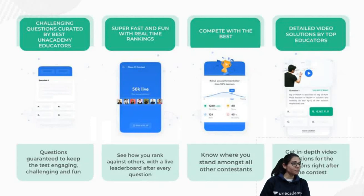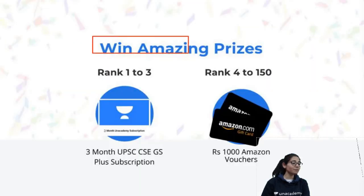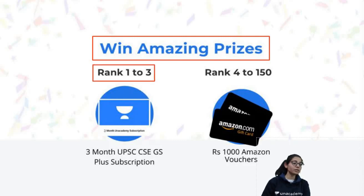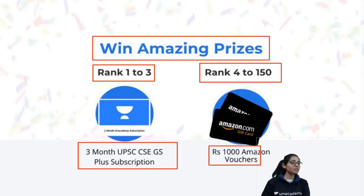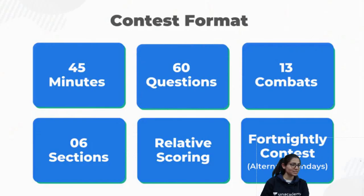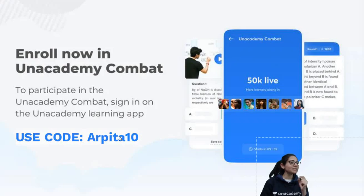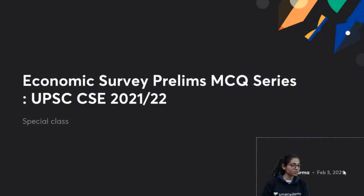After every question, you'll get detailed video solutions by top educators on Unacademy. You'll see your scoreboard, leaderboard, and rating, and you'll have a chance to win amazing prizes. Rank 1 to 3 wins a 3-month UPSS-CSE Plus subscription free of cost. Rank 4 to 150 wins a ₹1,000 Amazon voucher. Enroll in Unacademy Combat at 11am, beat the challenge, and win. Go to the Unacademy learning app, choose goal UPSS-CSE, go to the test section, enroll in the Combat, and use code ADHITA10 to unlock a free Unacademy Plus experience. The link is in the description box.